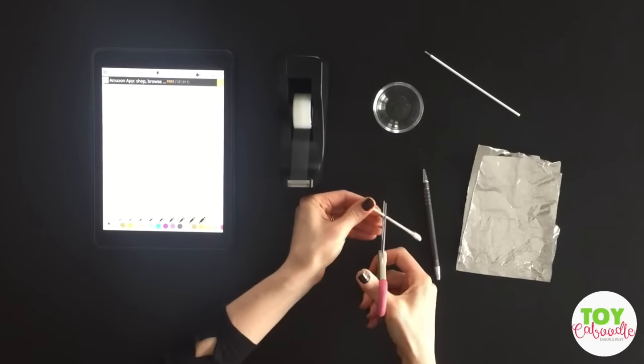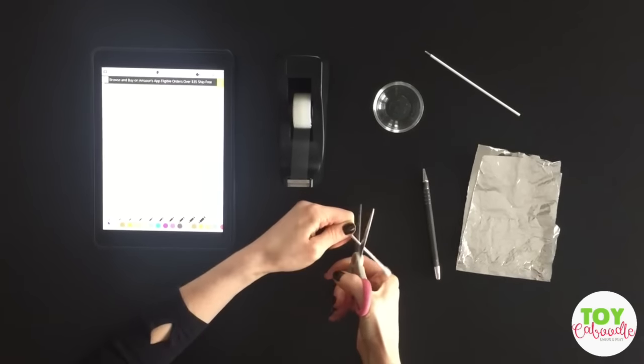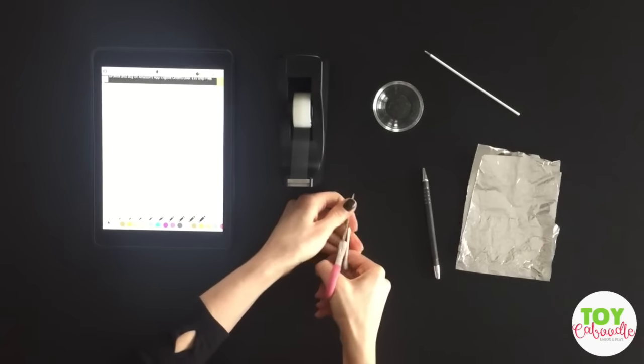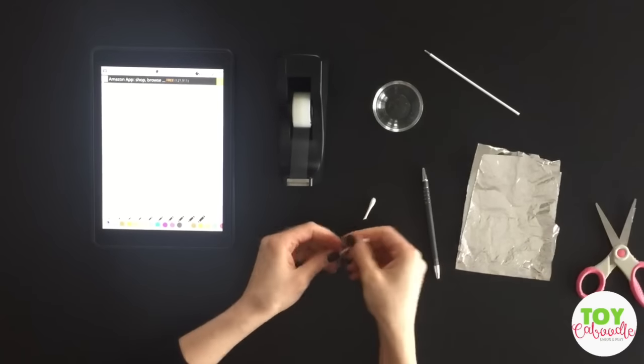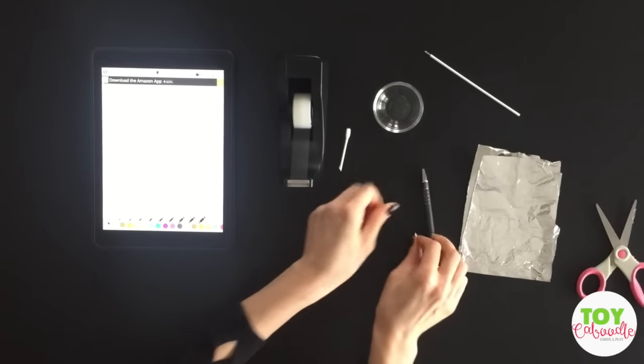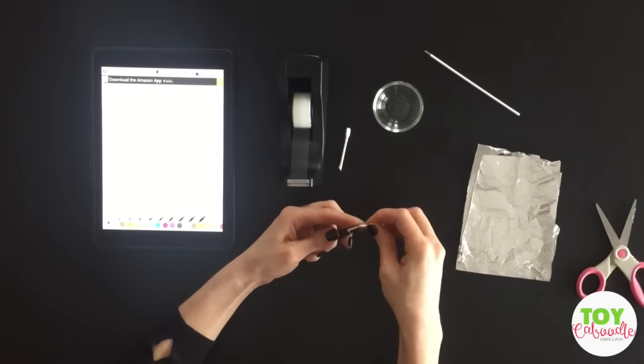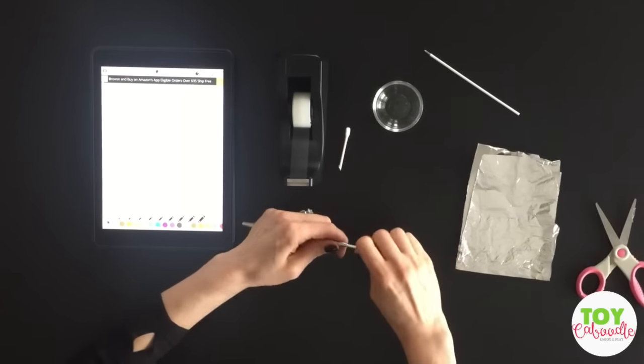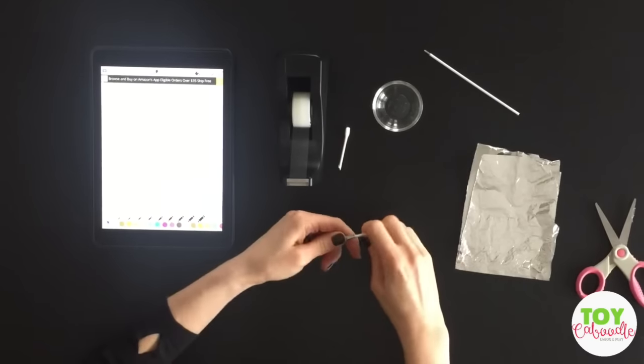So what you want to do is cut your q-tip. If you guys have better scissors, that would also be helpful. I'm going to use the shorter end of the q-tip, and what we're going to do is put it inside of the pen.